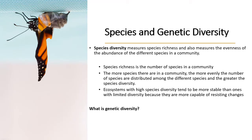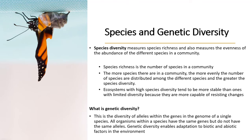Species diversity and genetic diversity is something else that we measure in biology. Species diversity simply measures the number of species that you would find in a particular area, and we also call that species richness. The more species there are in a community, the more evenly distributed the species tends to be. Areas that have high species diversity tend to be more stable, because when you have high species diversity you simply have high allele diversity, which links us to genetic diversity. The higher the genetic diversity, the higher the chances of the system becoming resilient, even when there is something dangerous or that attacks them.